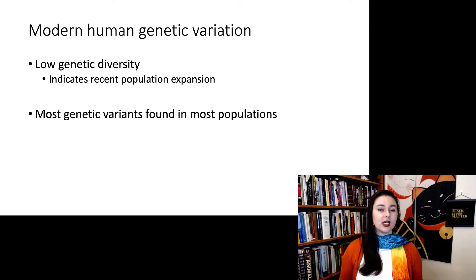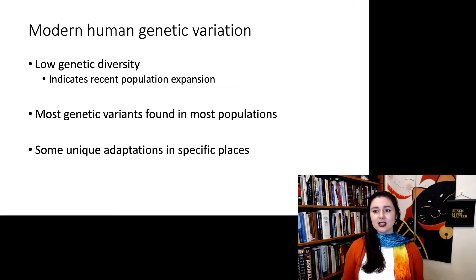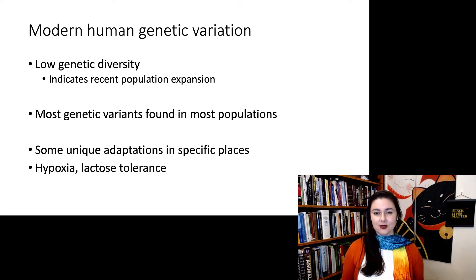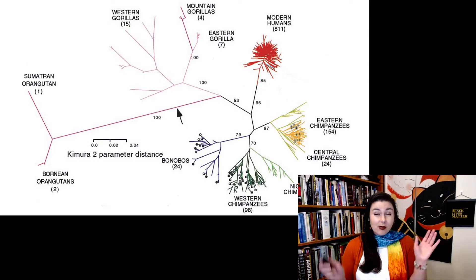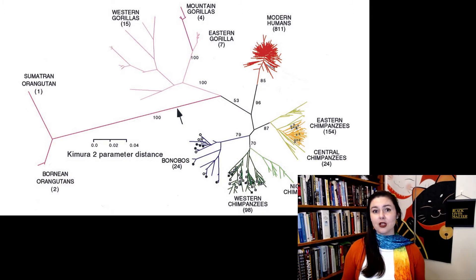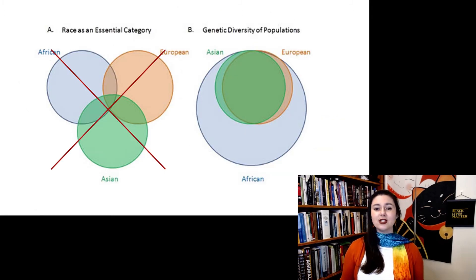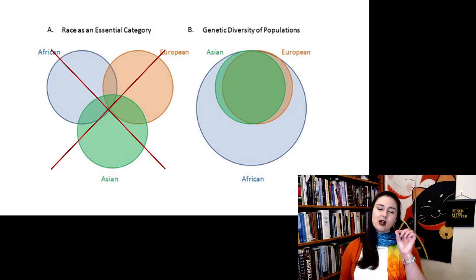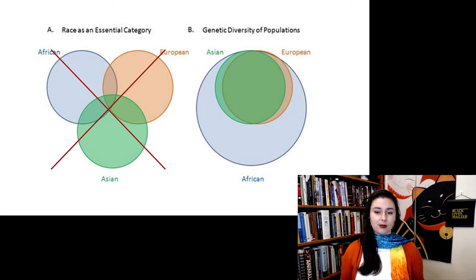Interestingly enough, most genetic variation in humans is actually found in every single population. There are, of course, some unique adaptations in specific places, but these are generally related to very specific things, such as hypoxia or lactose tolerance. Here we can see that all modern humans cluster really close together, and we see just bigger spreads in the genetic diversity of orangutans, gorillas, and chimpanzees. So even though there are more of us, we just haven't had enough time to accumulate that much diversity. With these Venn diagrams, you can see that most genetic variation is actually shared amongst all populations, and there's a small sliver unique to some populations such as Europeans — but really most of the diversity we find is in Africans.